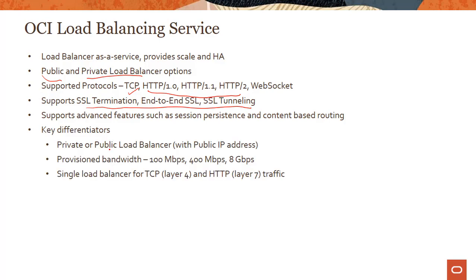Some key differentiators: with a public load balancer you get a public IP address — different from some other cloud providers where you only get a CNAME. When you provision a load balancer, you get a choice of shapes, essentially provisioned capacity: 100 Mbps (small), 400 Mbps (medium), and 8 Gbps. If you provision a shape according to your expected load, you don't have to pre-warm your load balancer. There is a single load balancer for both TCP (Layer 4) and Layer 7 traffic.